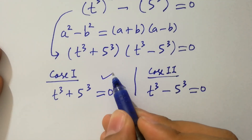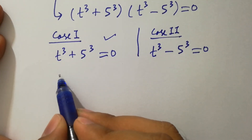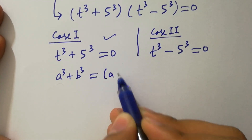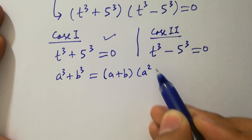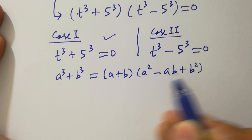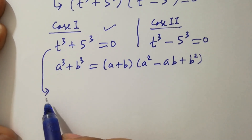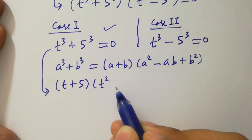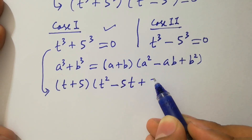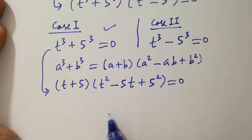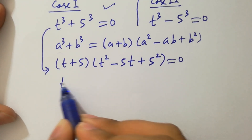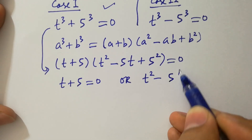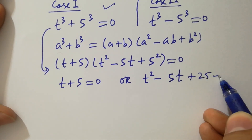First, take Case 1. We know the formula of a cubed plus b cubed, which equals a plus b, times a squared minus ab plus b squared. Applied here, it gives t plus 5, times t squared minus 5t plus 25, equal to 0. Either t plus 5 equals 0, or t squared minus 5t plus 25 equals 0.